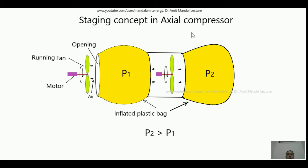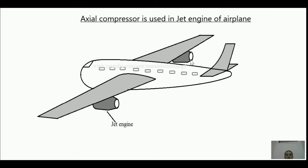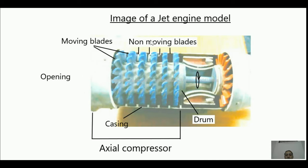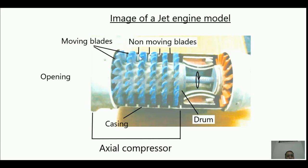Axial flow compressors are commonly used in jet engines of airplanes. You can see the airplane with jet engines below its wings, which develop the thrust to advance the aircraft. This is a real cut-section model of a jet engine. The blue-colored blades act as fans — these are the moving blades mounted over a drum, and the drum sits on the shaft. The entire drum rotates inside a casing, part of which has been removed so we can see inside.